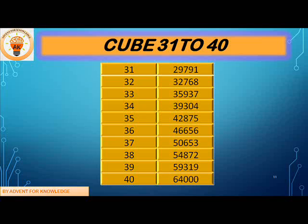Let's repeat the sequence again from 30 to 40. 30 cube is 27000, 31 cube is 29791, 32 cube is 32768, 33 cube is 35937, 34 cube is 39304, 35 cube is 42875, 36 cube is 46656, 37 cube is 50653.